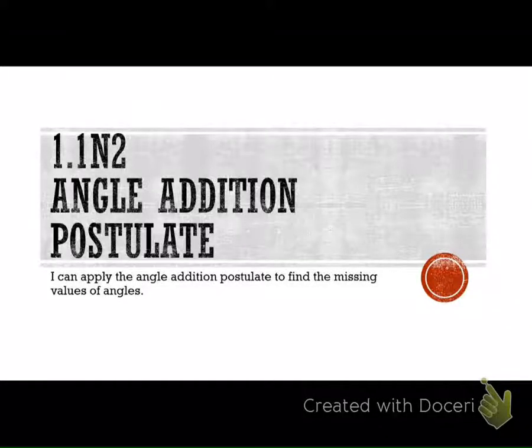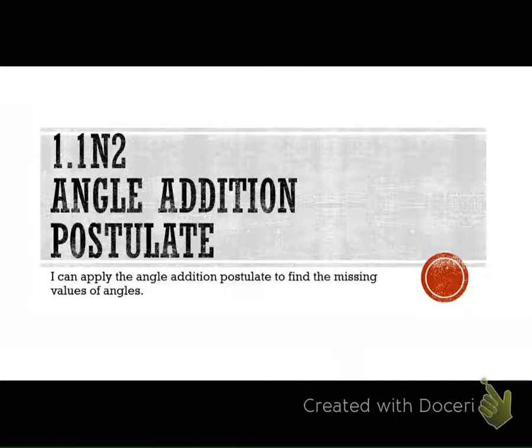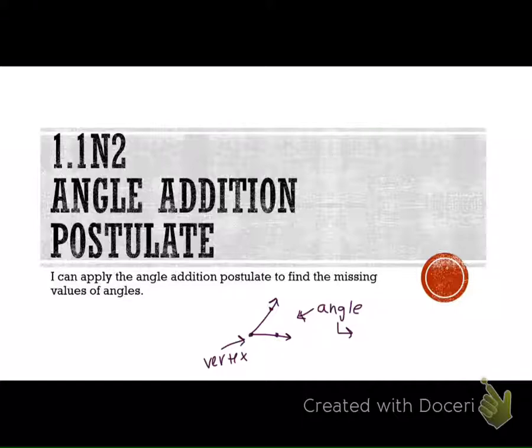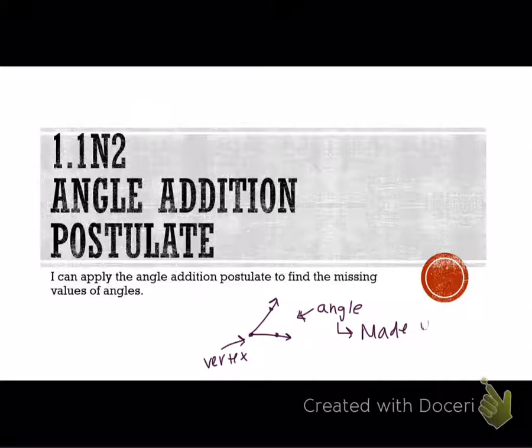The angle addition postulate is similar to the segment addition postulate except it's dealing with angles. I can apply the angle addition postulate to find the missing values of an angle. Just remember that this is an angle, that's the vertex, and an angle is made up of two rays.